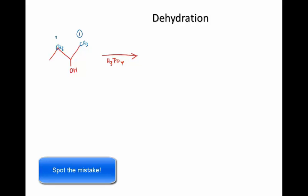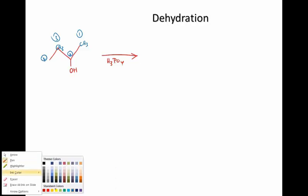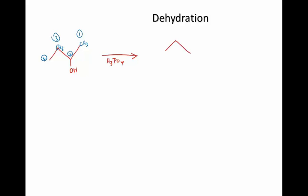It could come off carbon number one or carbon number three. If it comes off carbon number one, then the product will look like this, because the double bond will form between carbons one and two.